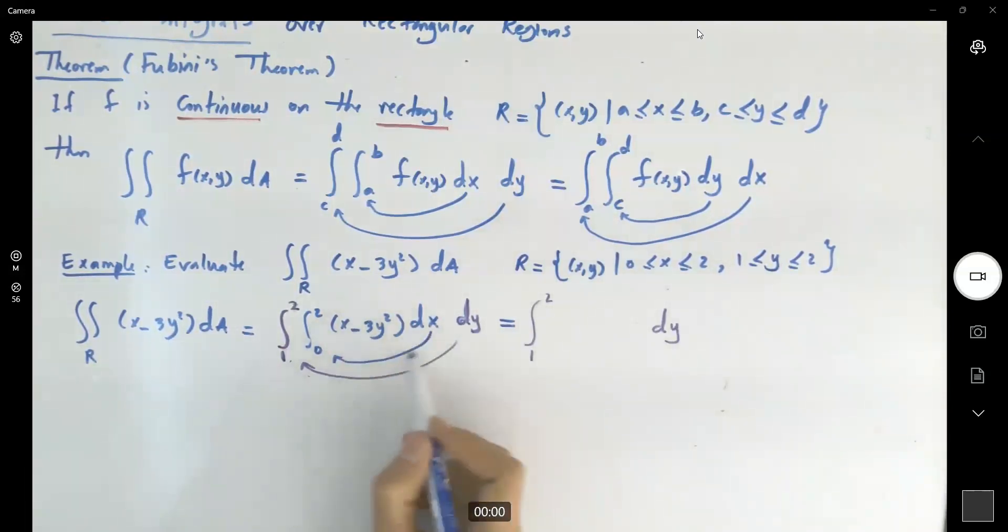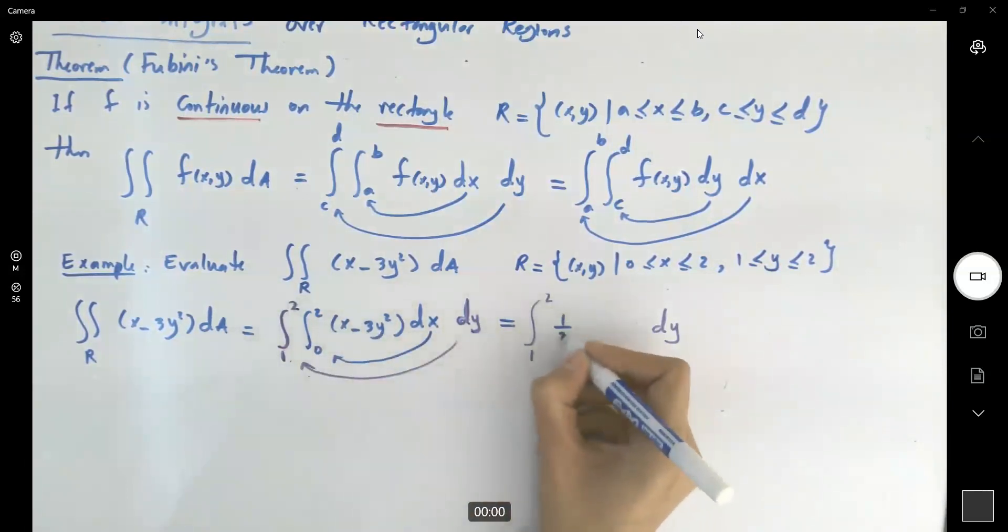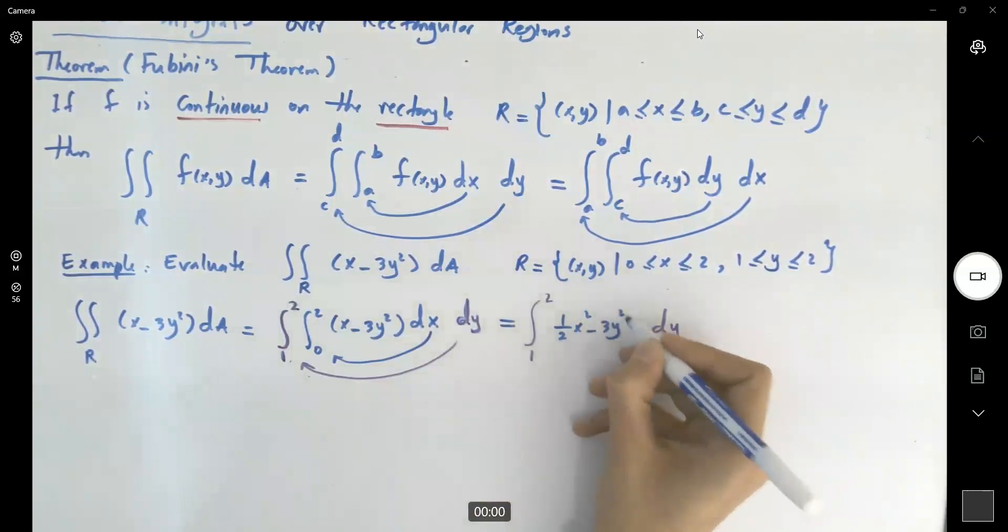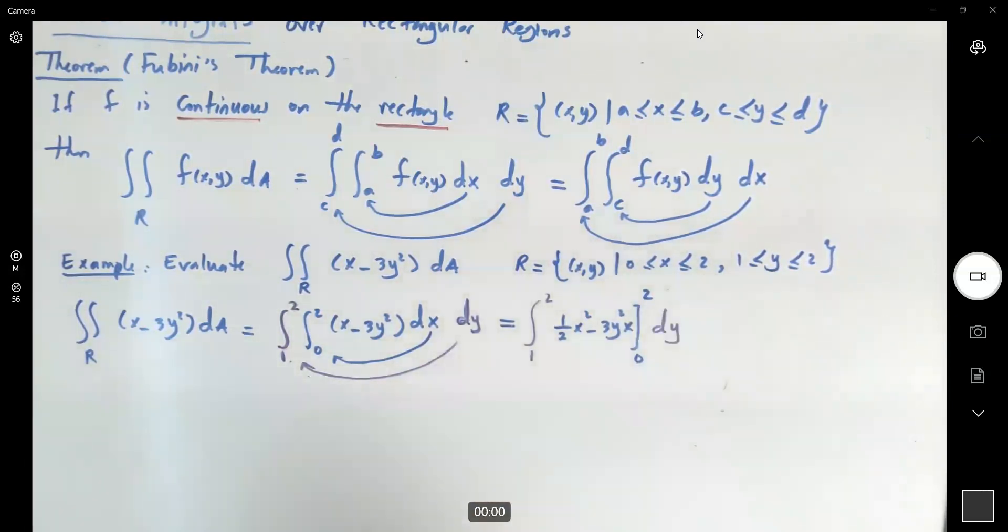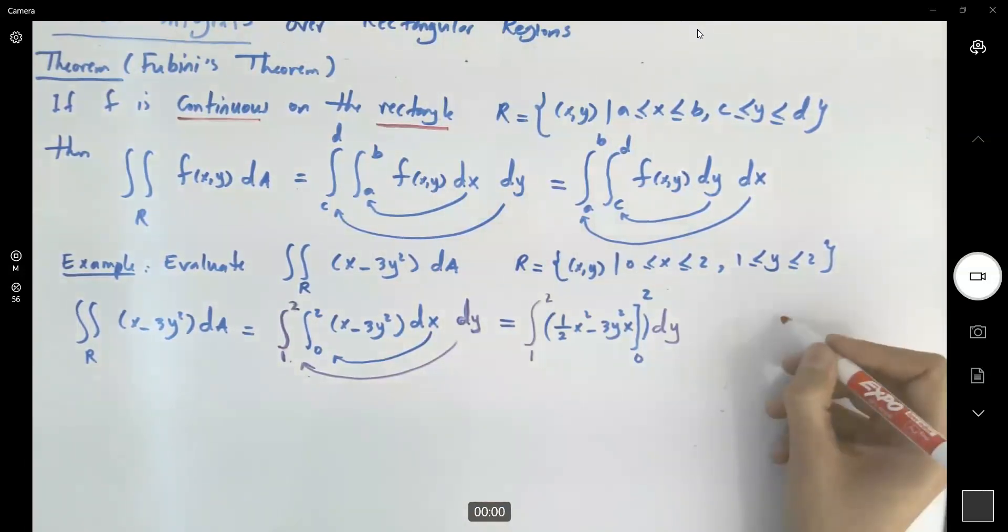Taking the integral with respect to x, the integral of x is a half x² minus 3y² times x, while x is in between 0 to 2. So far, so good.